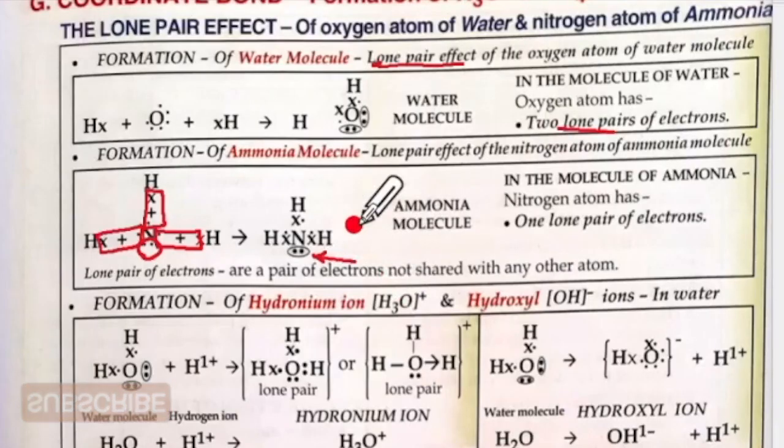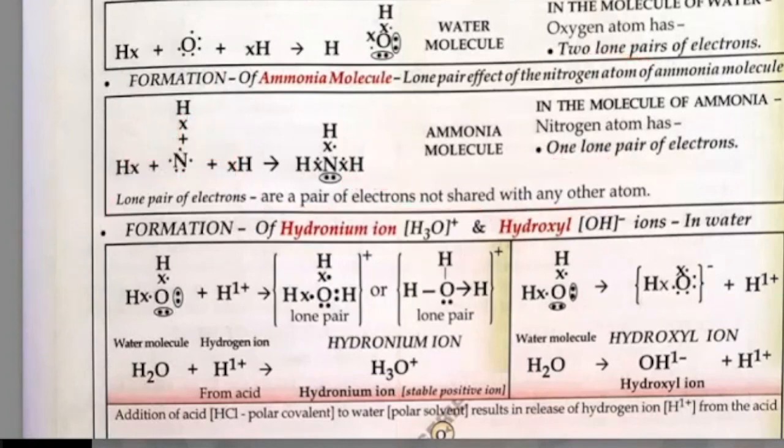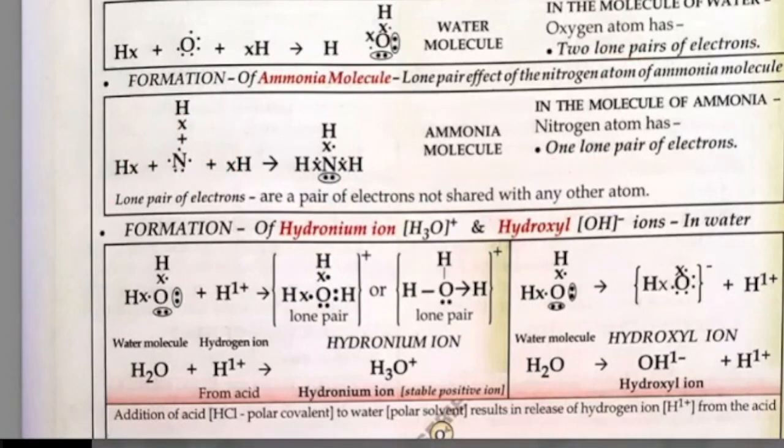And these two over here, circle that. Always the lone pair will be shown like this with a pair of electrons. So this has one lone pair. What are they? They are the pair of electrons which are not shared with any other atom.